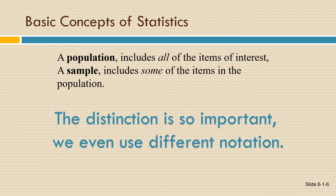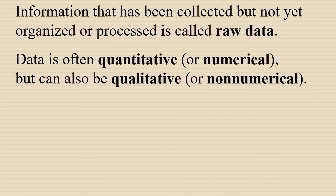The distinction between population and sample is so important that we even use different notation when we're talking about populations from when we're talking about samples. Information that's been collected but not yet organized or processed is called raw data. Data can be categorized as quantitative, which you can think of as numerical, or qualitative, which you can think of as non-numerical or descriptive.